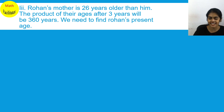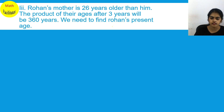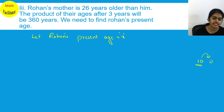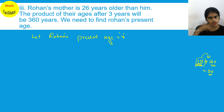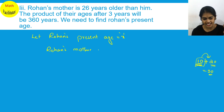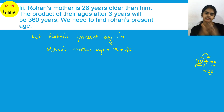Rohan's mother is 26 years older than him. The product of their ages after 3 years will be 360, and we need to find Rohan's present age. Let Rohan's present age be X. Since his mother is 26 years older, Rohan's mother's present age is X plus 26. For example, if you are 10 and your father is 20 years older, your father's age is 10 plus 20 equals 30.